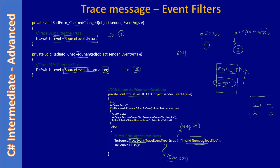Whether the user sets information or error level, this error message will always reach the listener because it's in the top-most error category. But when we set the source level as error, the information message won't go to the listener — we will see that through a demo as well.